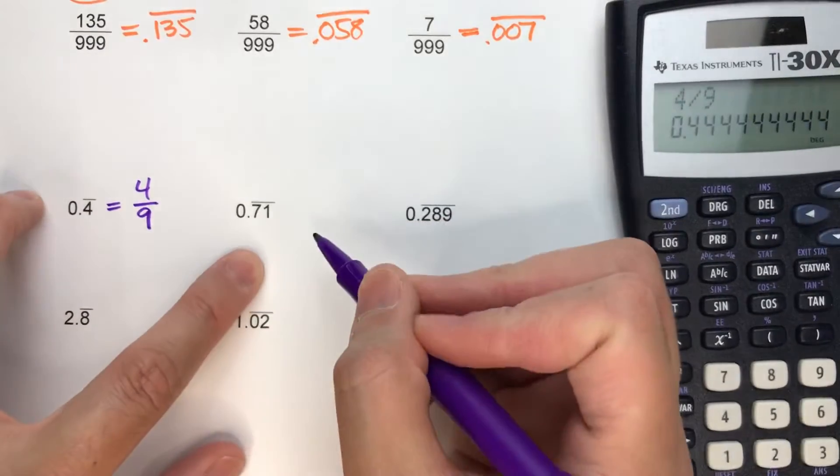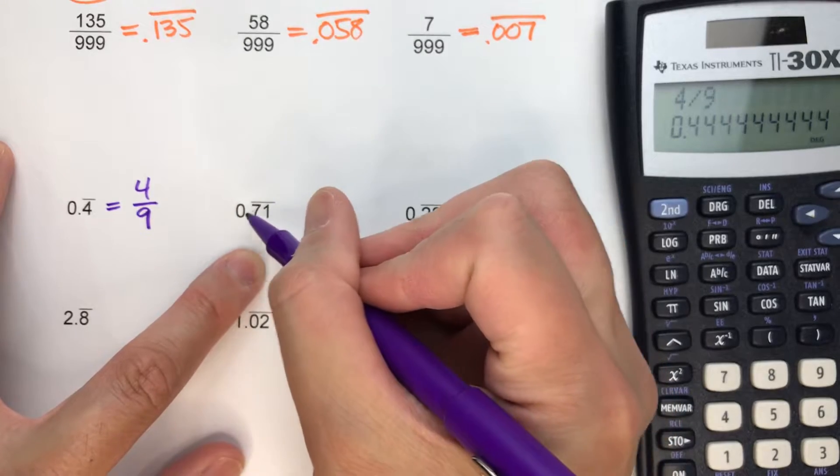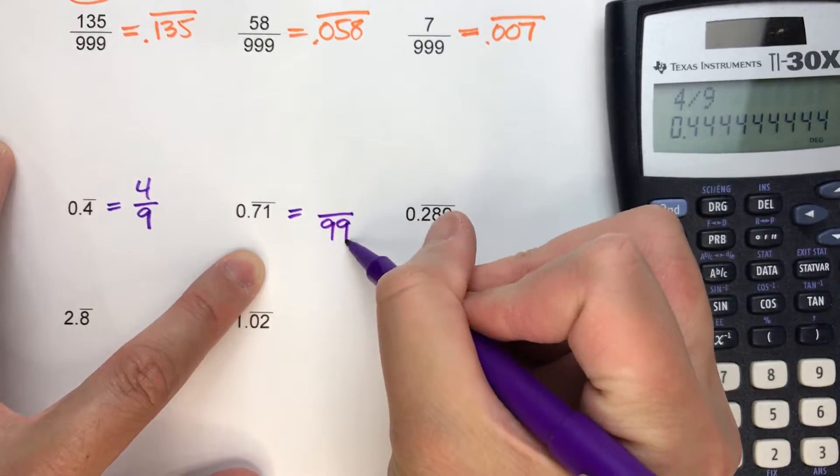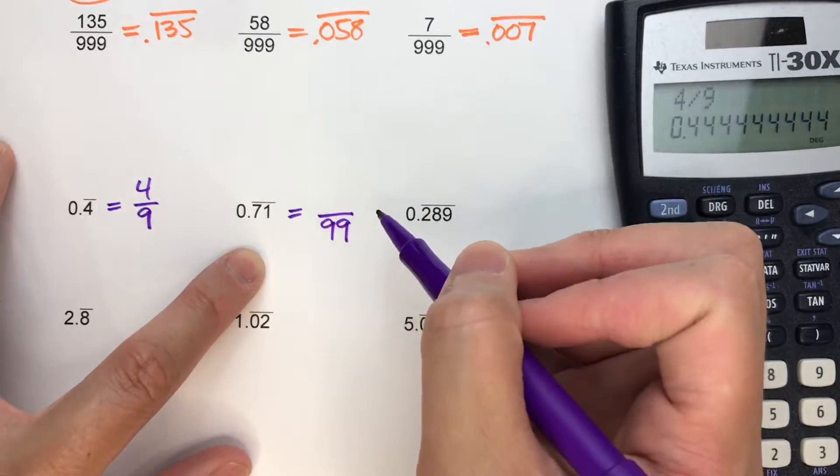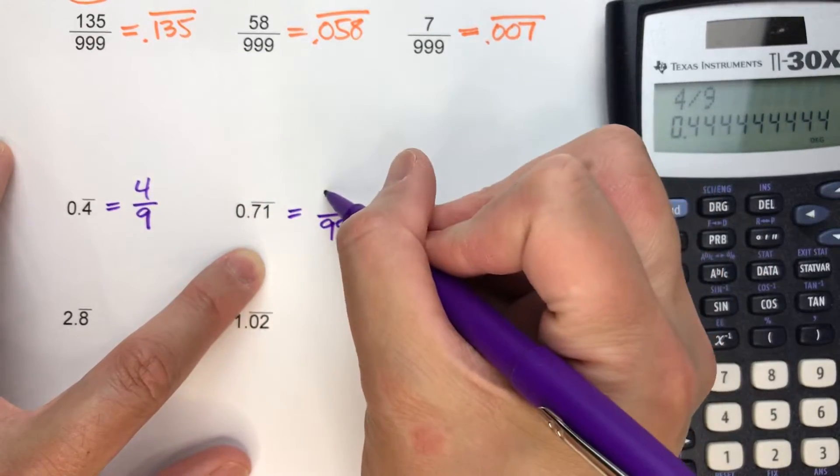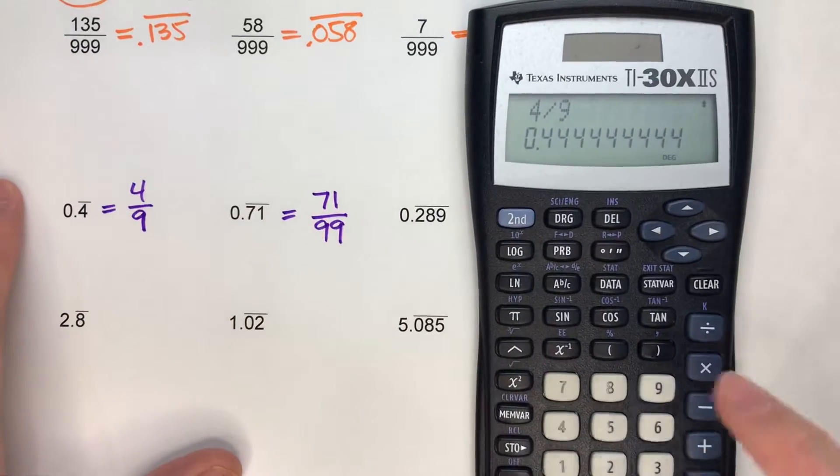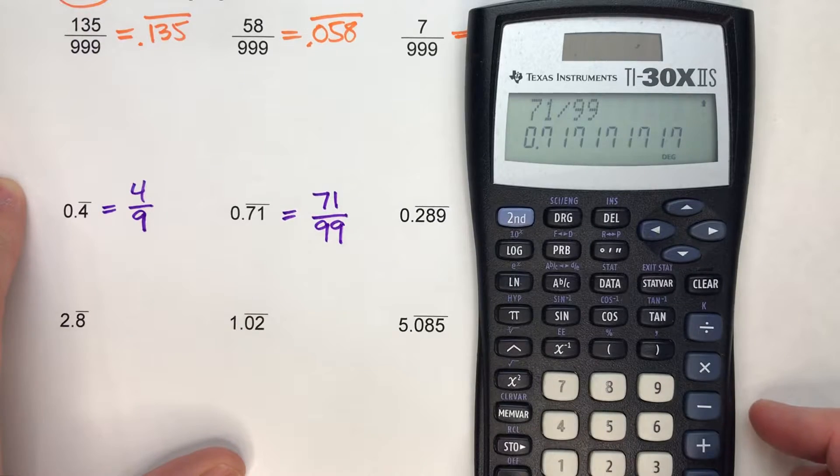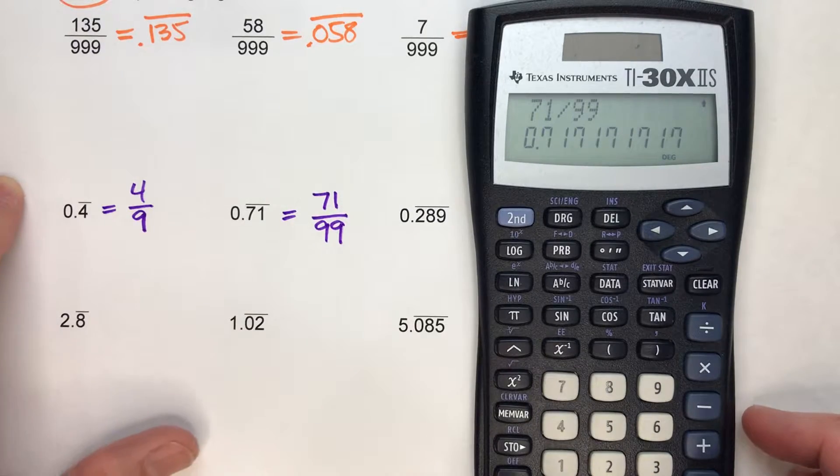Now 0.71 repeating. This time I've got two digits repeating, so I know that the denominator is going to be 99. What are the two digits repeating? A 7 and a 1. So that must be in my numerator. Not sure? Let's check. 71 over 99? 0.717171. There you go.